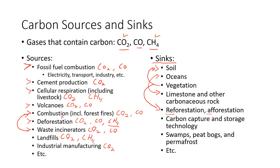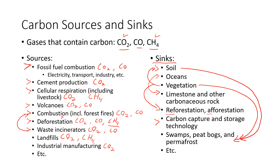Carbon capture and storage technology is an innovative approach that could potentially draw carbon dioxide straight out of the atmosphere and capture it for a long period of time. Swamps, peat bogs, and permafrost are also important sinks — they hold a significant amount of carbon, getting at both vegetation and soil storage, so they deserve their own mention.